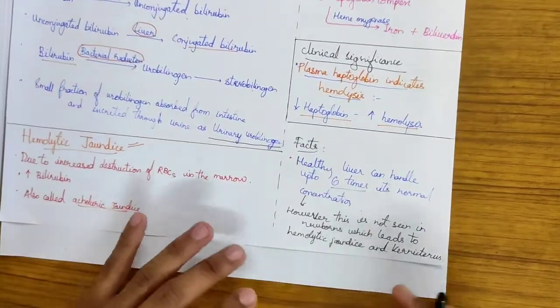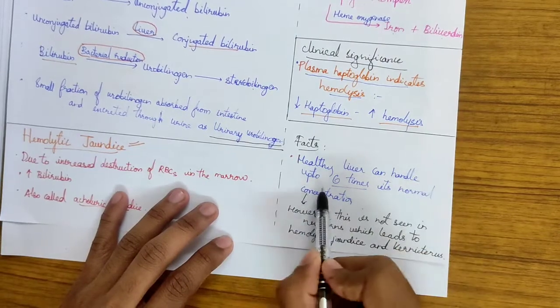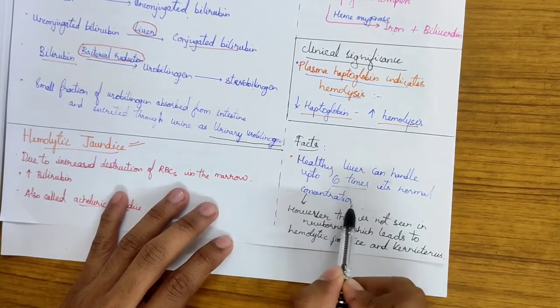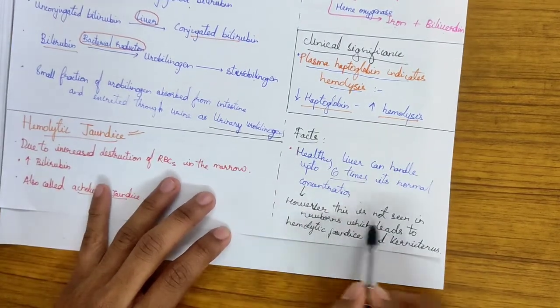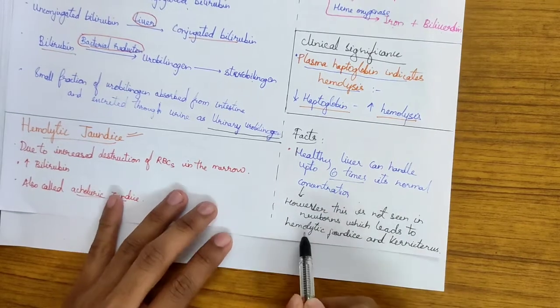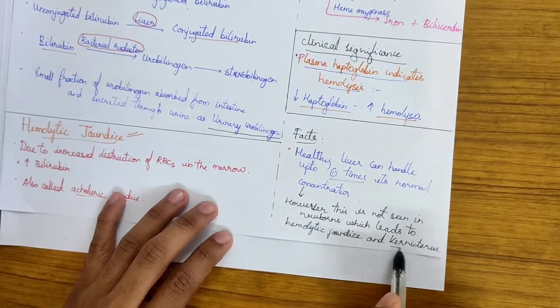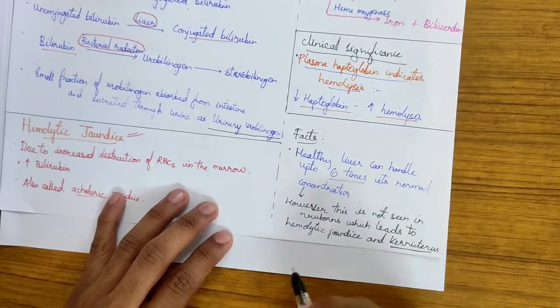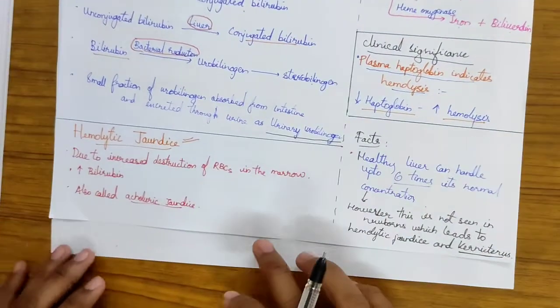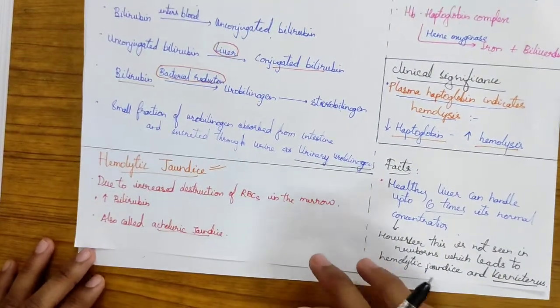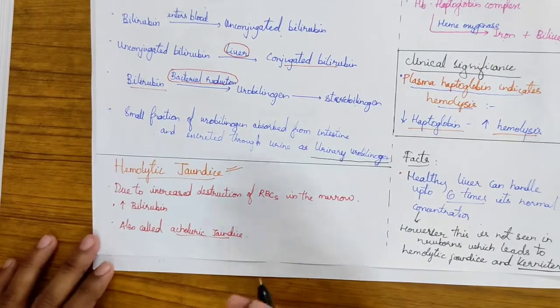Let's talk about some facts. Healthy liver can handle up to 6 times its normal concentration of bile. However, this is not seen in newborns which leads to hemolytic jaundice and kernicterus. Kernicterus is the escape of bile into the blood-brain barrier and it goes to the brain causing mental disorders.